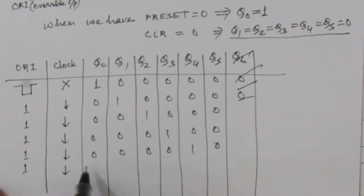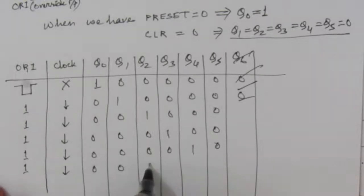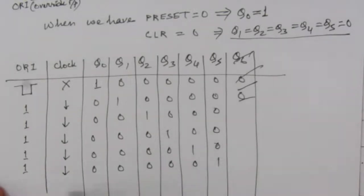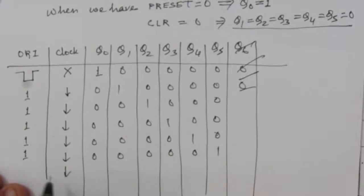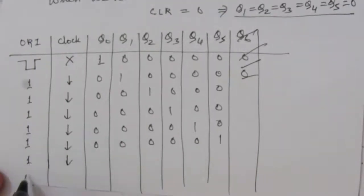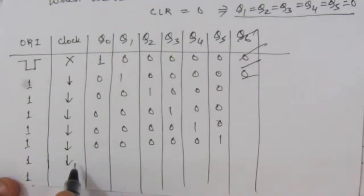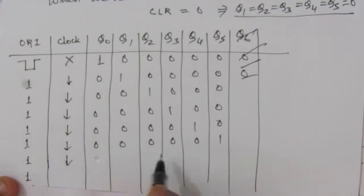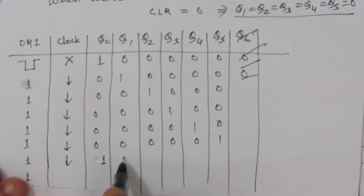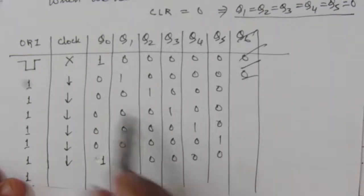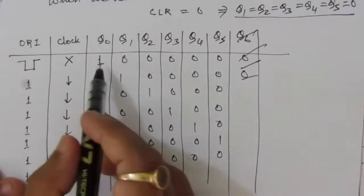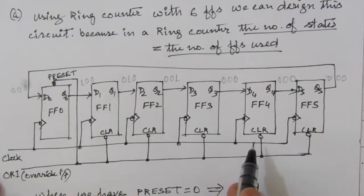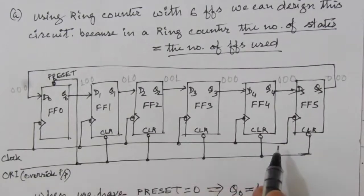After the fifth negative edge, we have 0,0,0,0,0,1. After the sixth negative edge, Q5 output is connected to Q0 input — since Q5 was 1, Q0 becomes 1 again and all remaining outputs become 0. After the sixth clock pulse, the same sequence repeats. So this circuit generates six repeated timing signals.